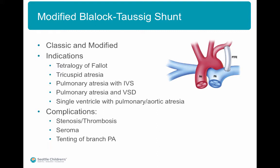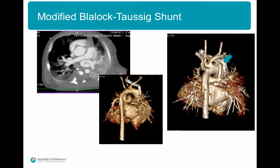It was originally meant to relieve cyanosis in patients with tetralogy of Fallot. However, currently it's also being used for tricuspid atresia, pulmonary atresia with intact ventricular septum and VSD, as well as single ventricle physiologies. The complications of this conduit include stenosis and/or thrombosis, seroma formation, and tenting of the branch pulmonary artery.